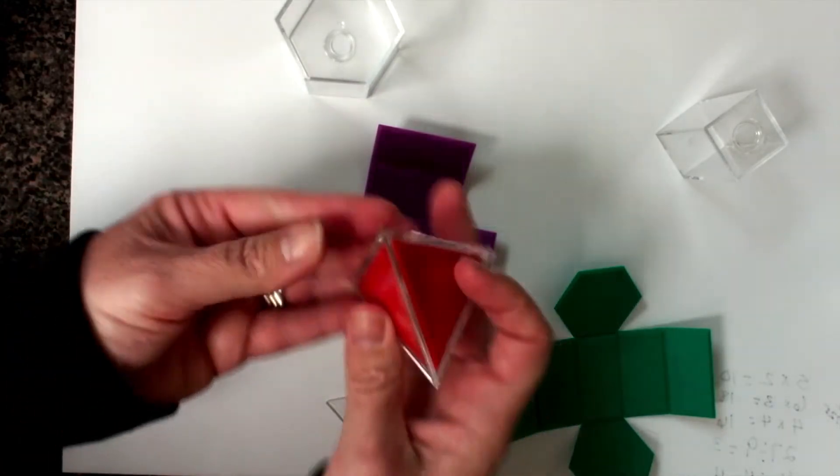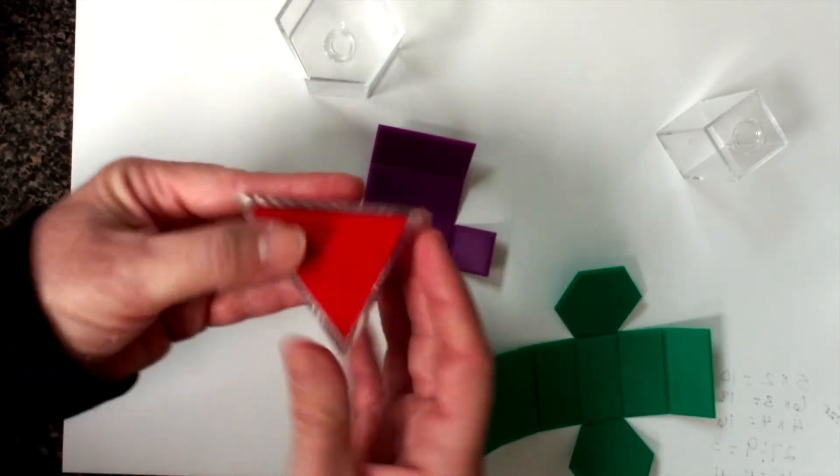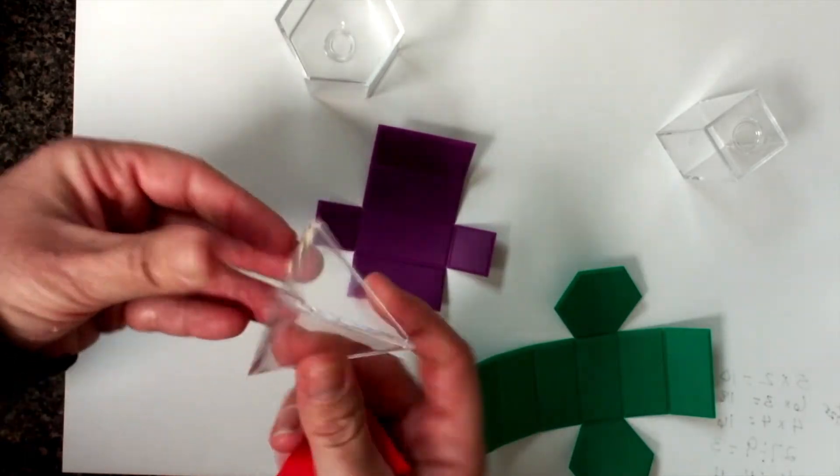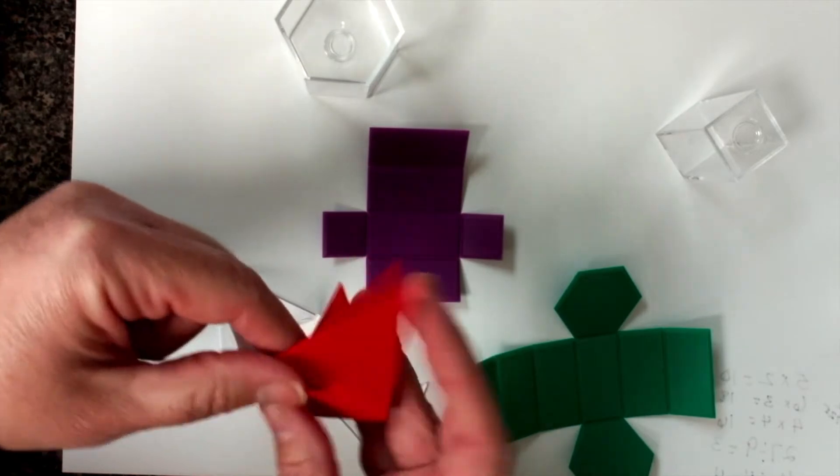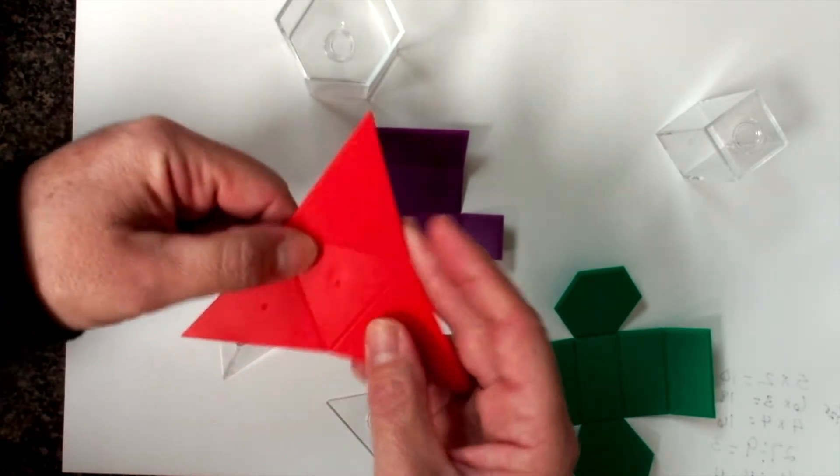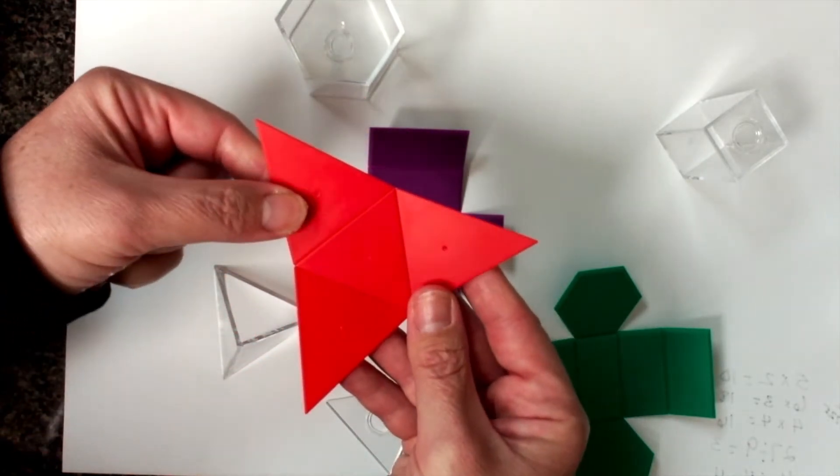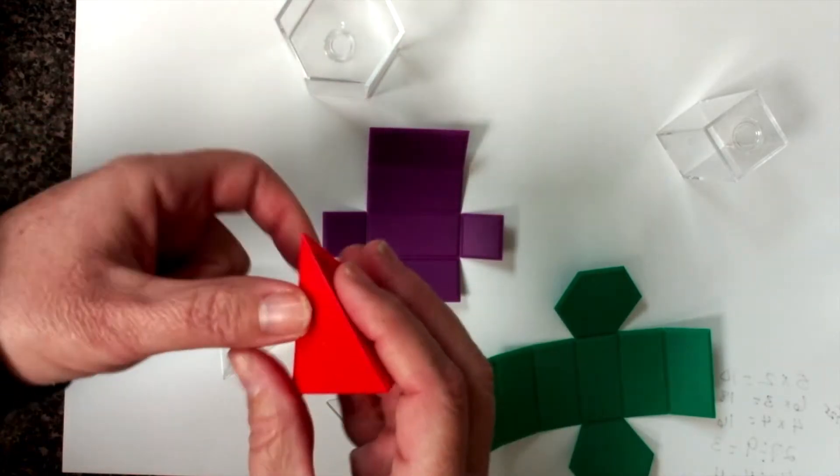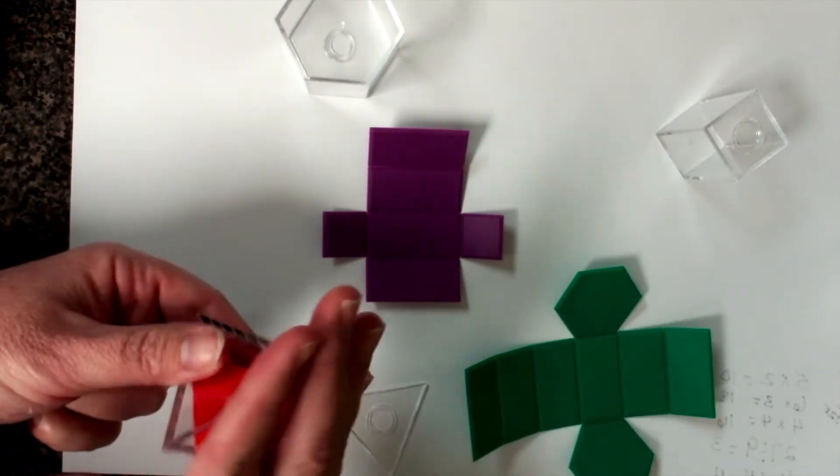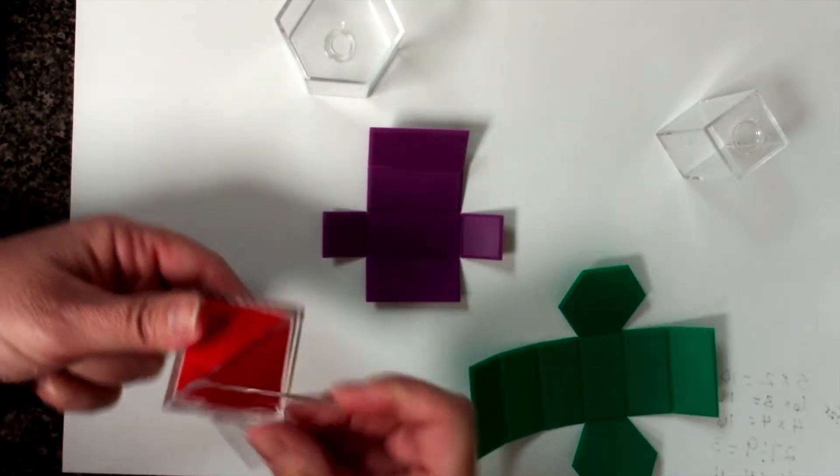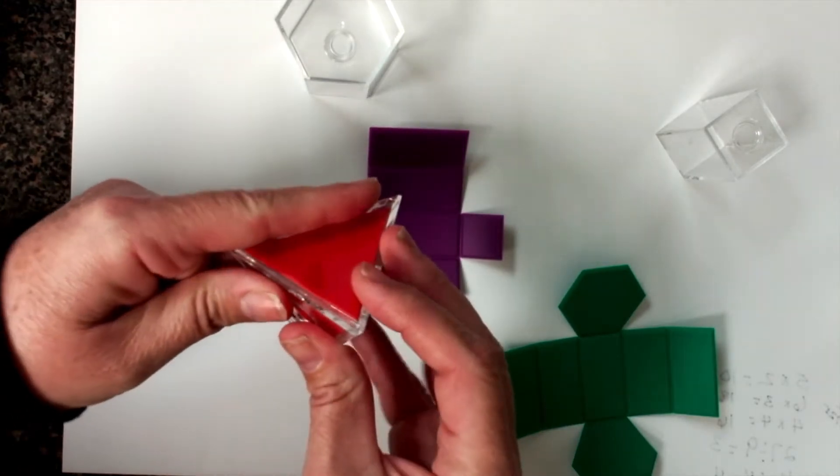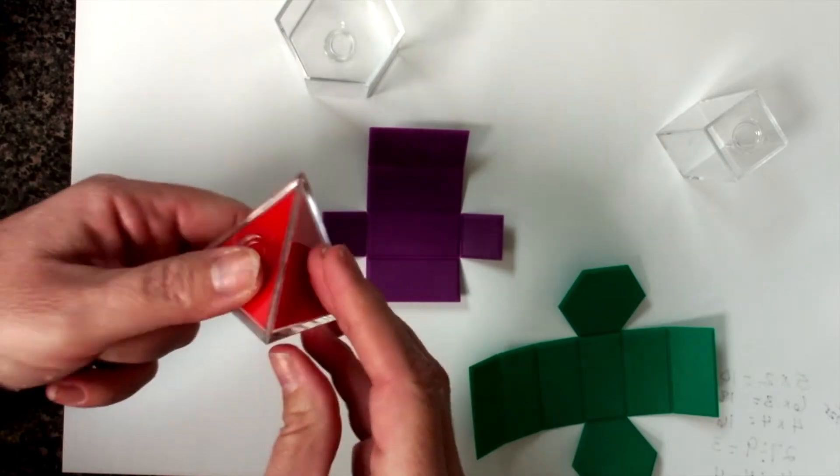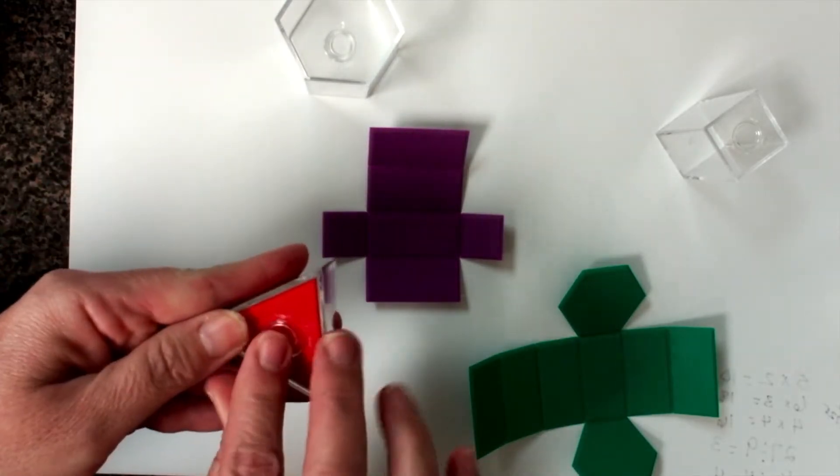Then they can actually put it back in if they need to, which is great for our students to be able to see how that would fit right in there and how that's the net. And so what is the net for this pyramid, this triangular pyramid?